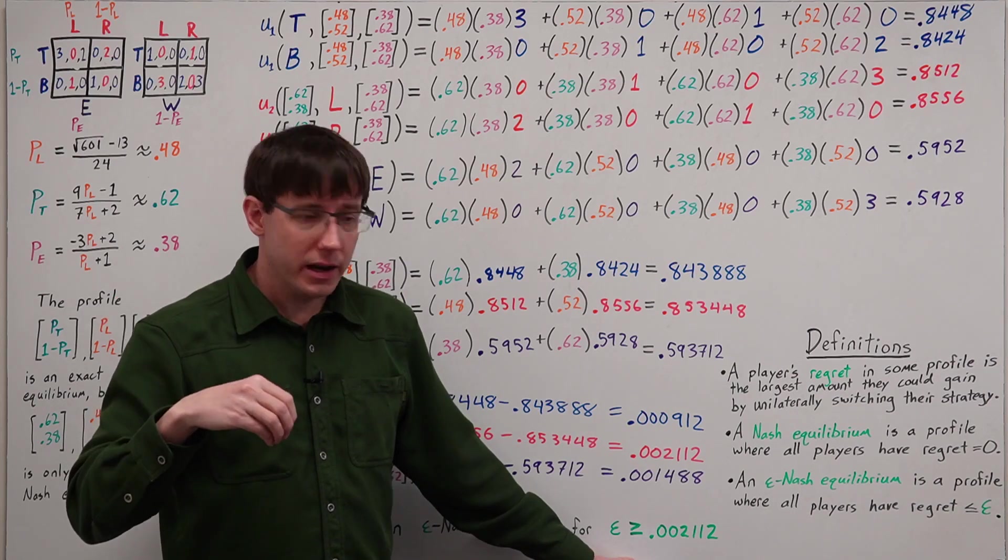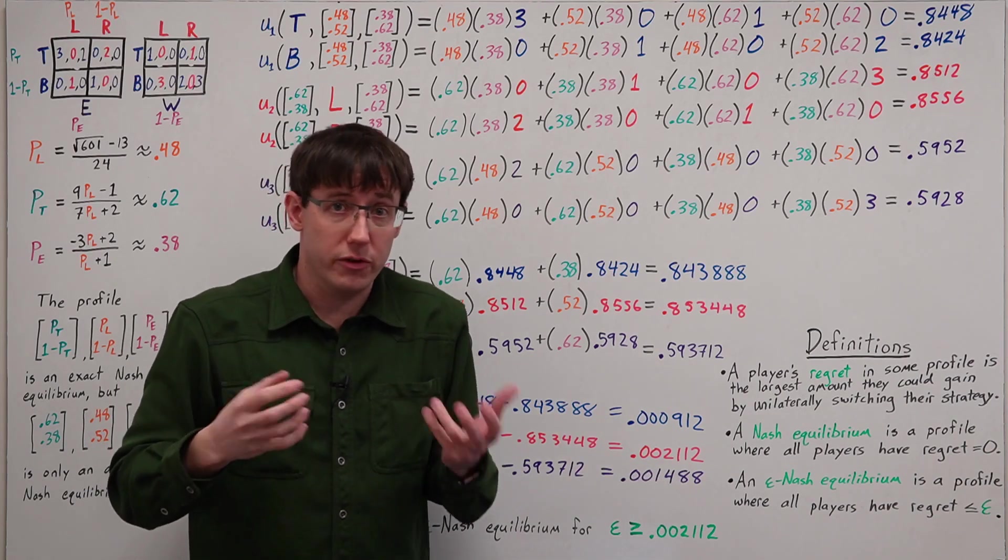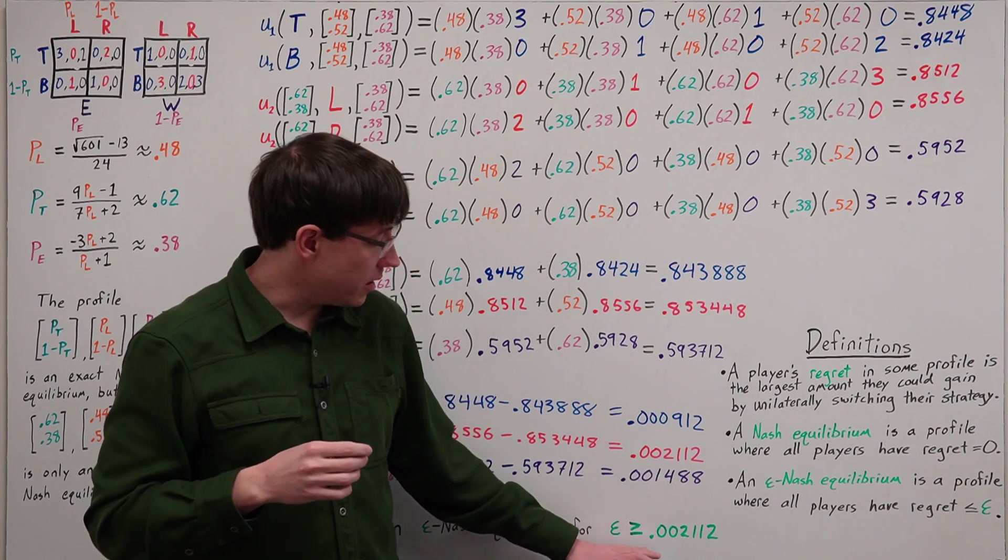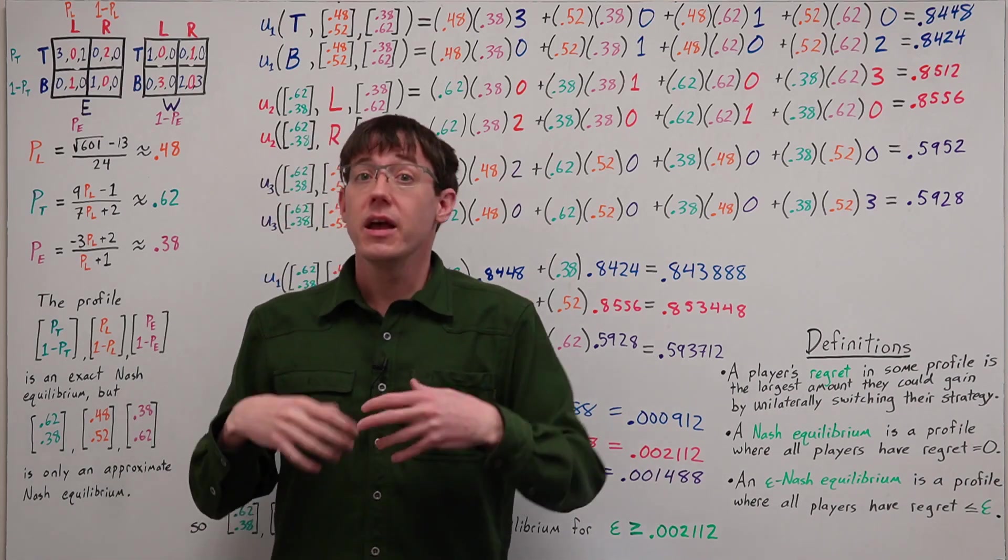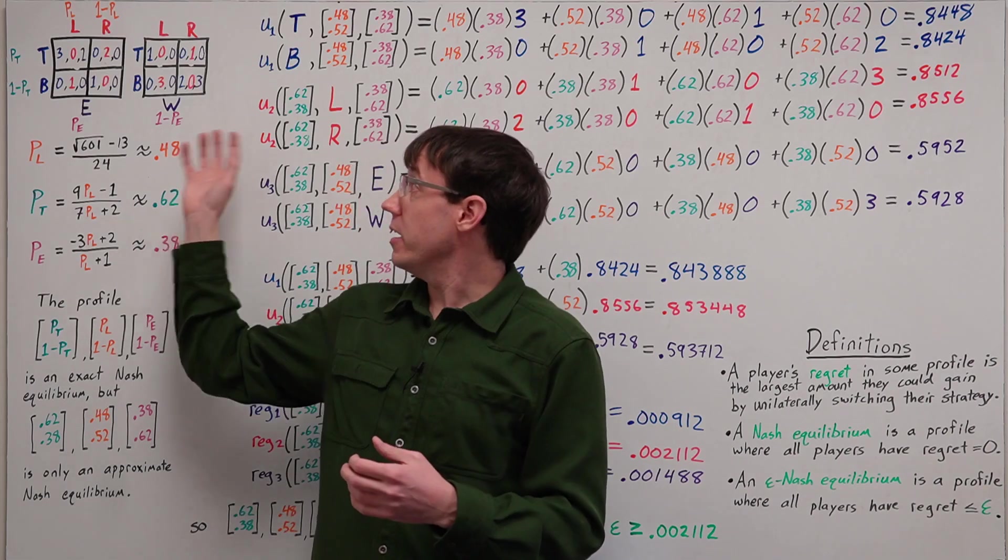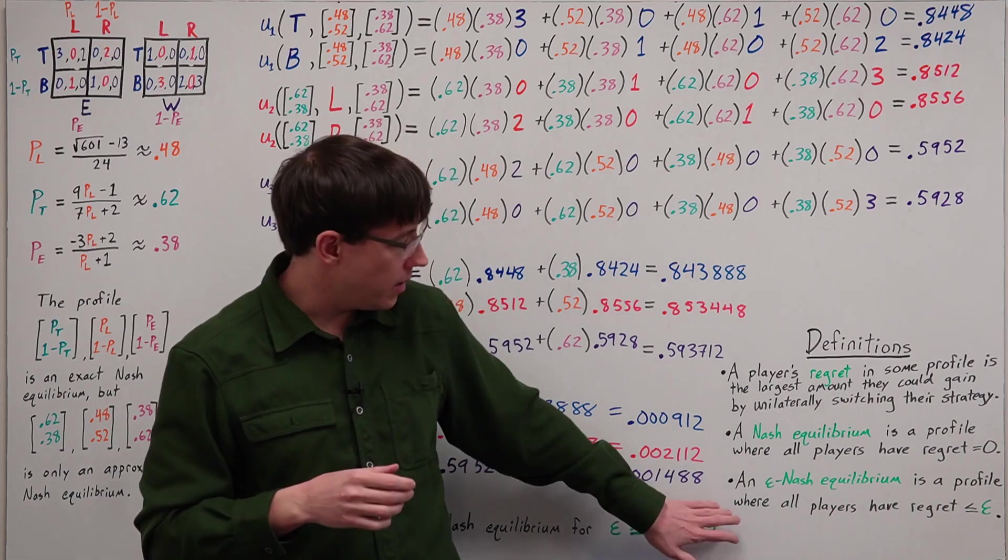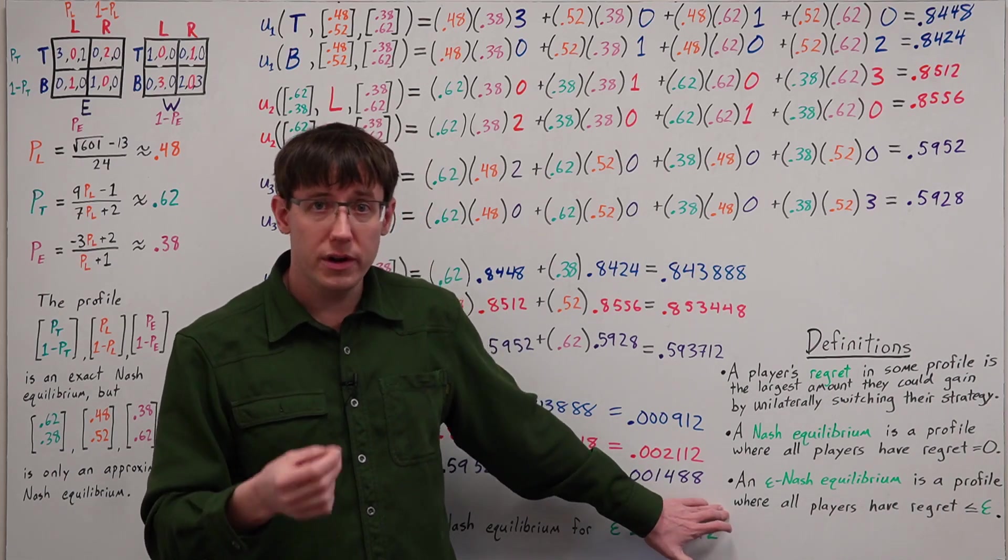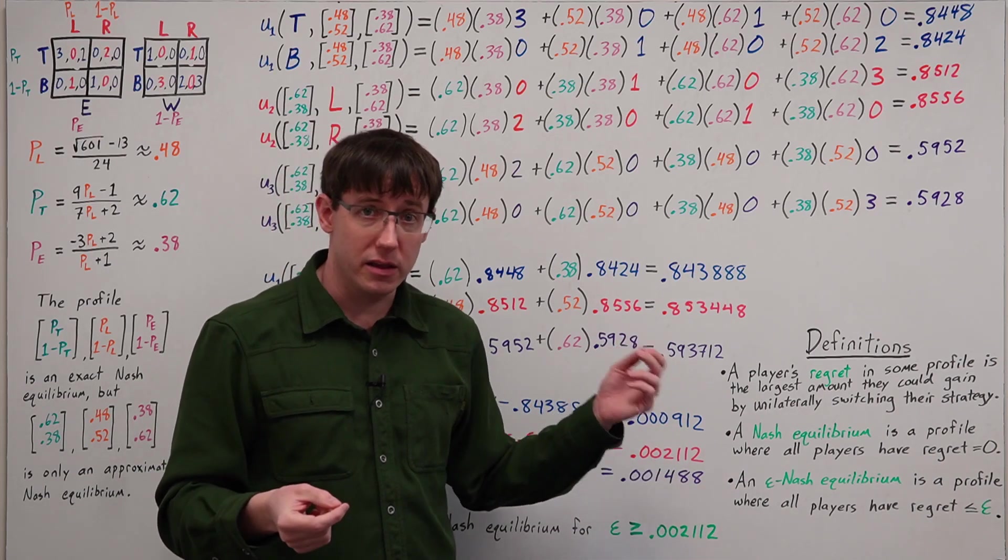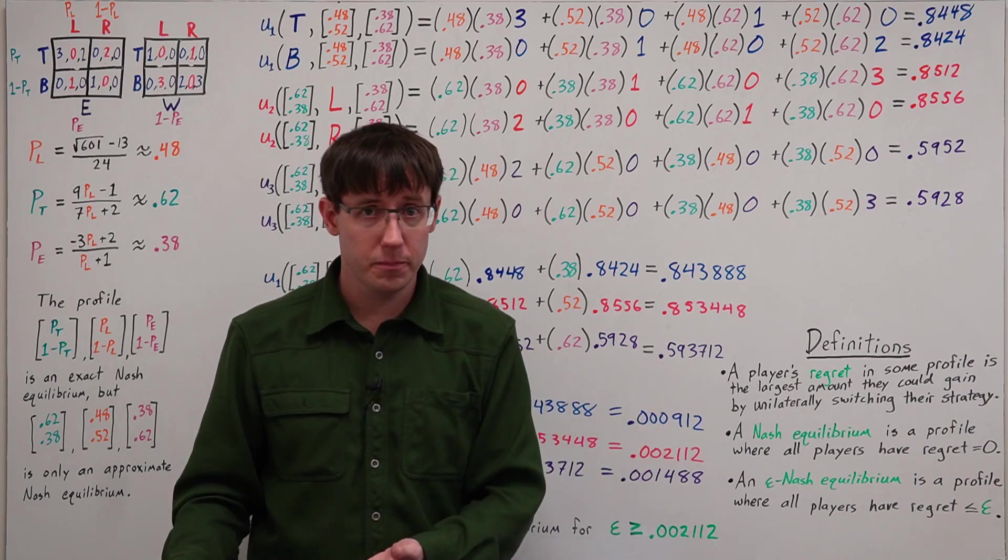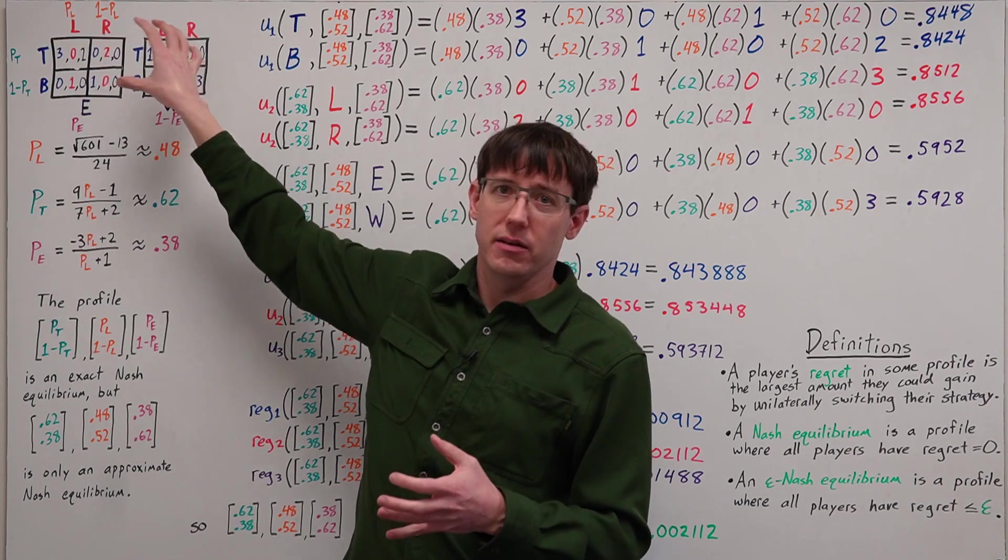And so when we think about the epsilon in an epsilon Nash equilibrium, we need to keep in mind that this depends on the scale of the payoffs for different players. And this concept of taking a max over the different players' regrets only makes sense if we are thinking about the players' utilities on roughly the same scale. And if we are choosing some epsilon threshold to say we have an approximate Nash equilibrium as long as the max regret is below that threshold, then we need to choose our threshold relative to the payoff scale of the game.